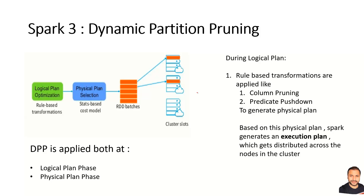To understand how DPP is applied in Spark 3, let's quickly revisit how Spark SQL query execution works. First, the query is analyzed and a logical plan is prepared, where rule-based transformations and optimizations are done — such as column pruning and static partition pruning via predicate pushdown. Then a physical plan is generated, and cost-based optimization picks the most effective physical plan. This is sent to the cluster nodes where the required data partitions reside, and the worker task execution happens.